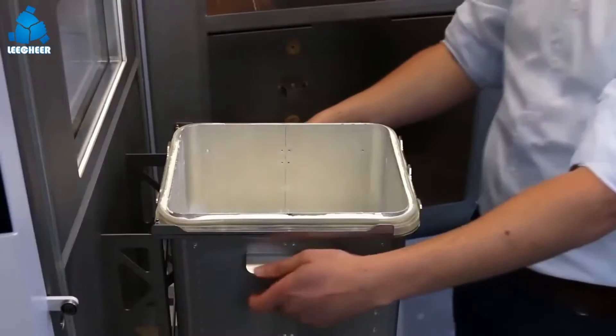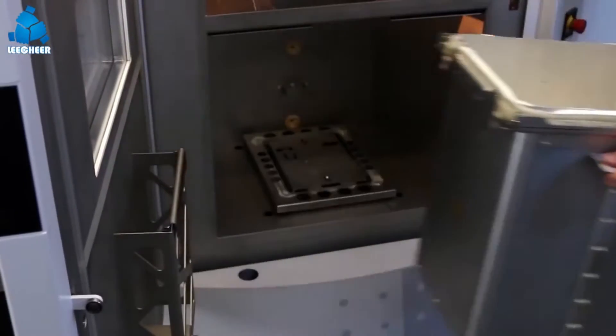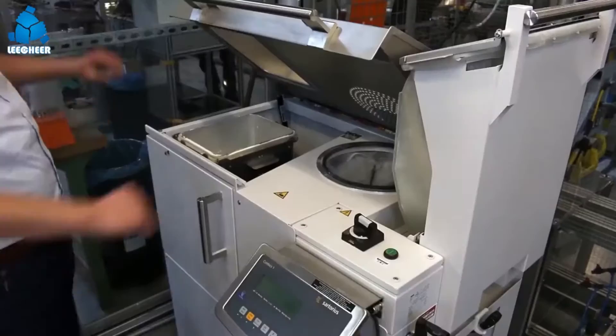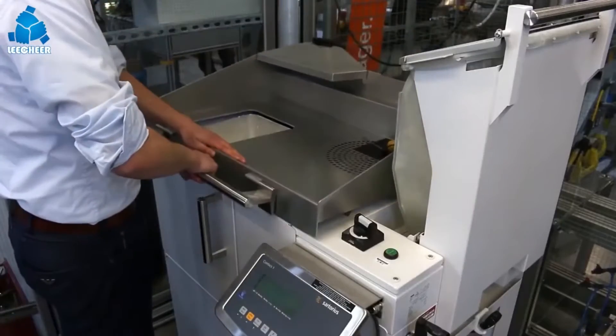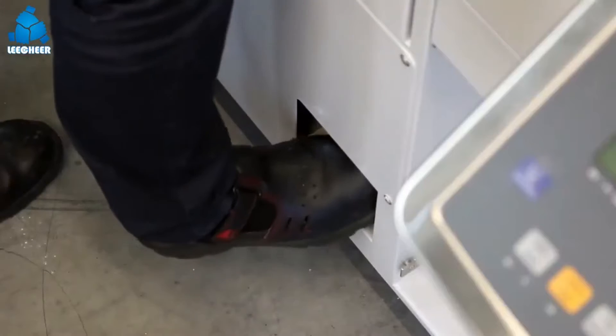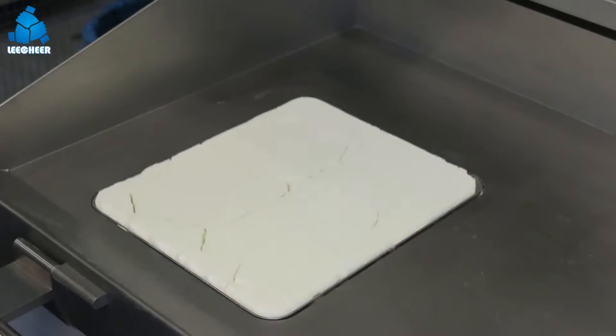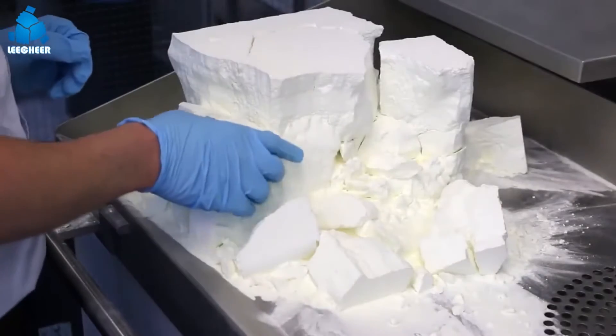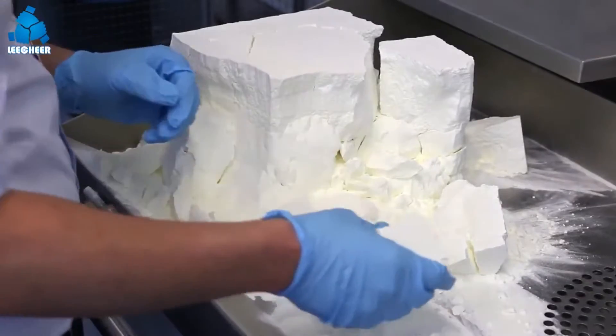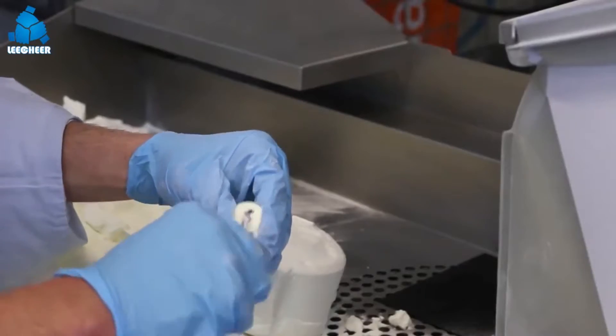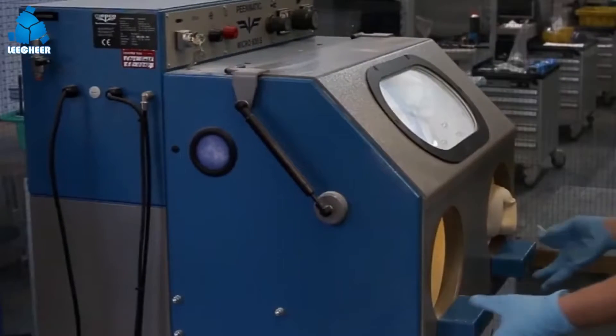There are some benefits of using this technology such as metal parts can be produced directly in this method. A wide selection of materials are available for this method. No additional base support is needed for printing complex models without failures. But it also has some limitations such as the result having a rough surface, the process producing harmful gases, and SLS printed parts having porous surfaces.